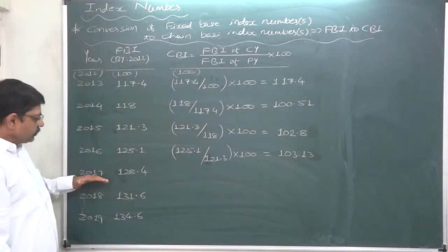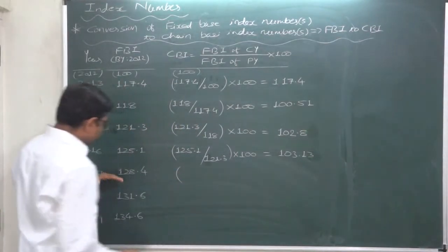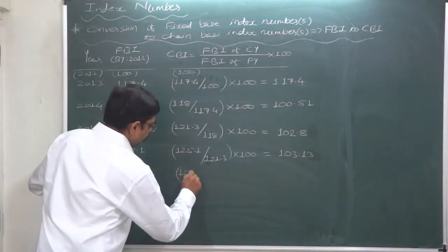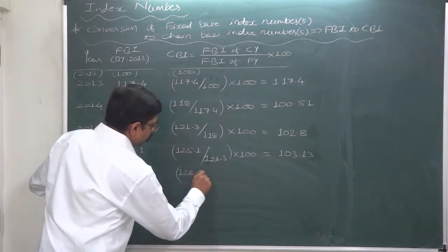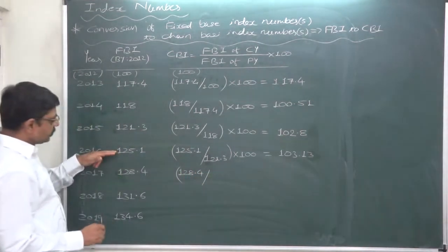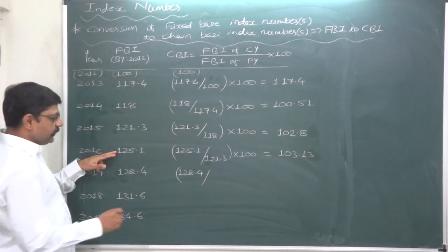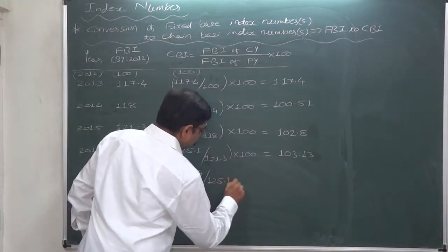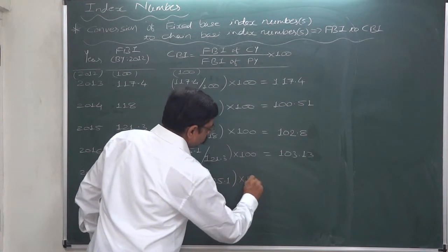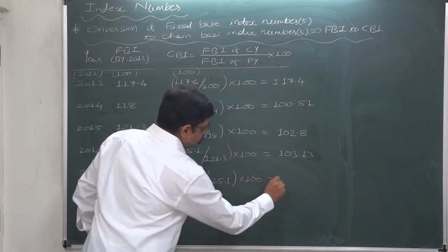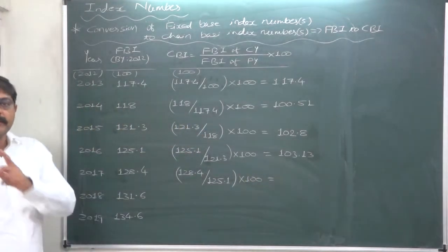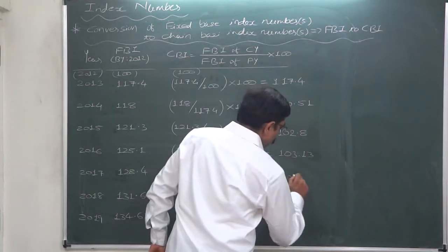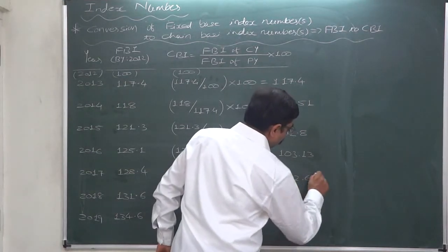For 2017: the fixed-base index number for the current year is 128.4, divided by the fixed-base index number of the previous year, which is 125.1. Multiply this ratio by 100. The answer is 102.64.